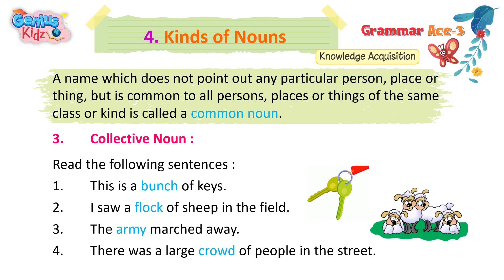Collective Noun — Read the following sentences. 1. This is a bunch of keys. 2. I saw a flock of sheep in the field. 3. The army marched away. 4. There was a large crowd of people in the street.